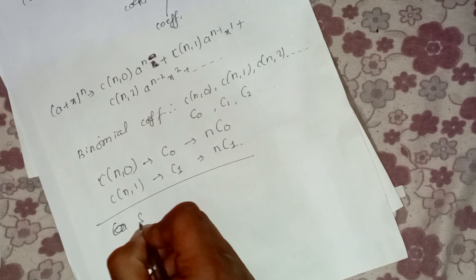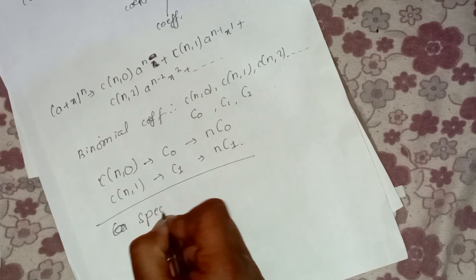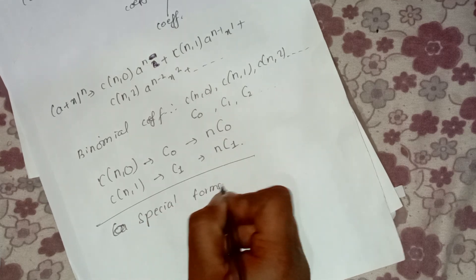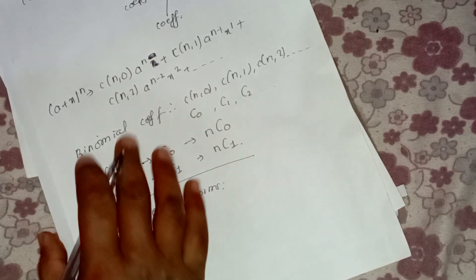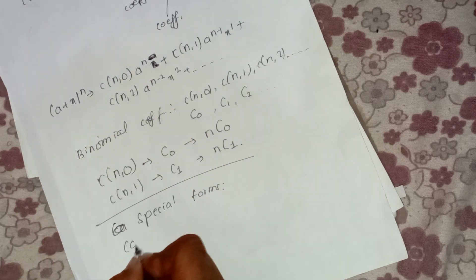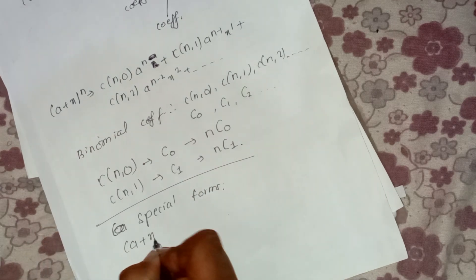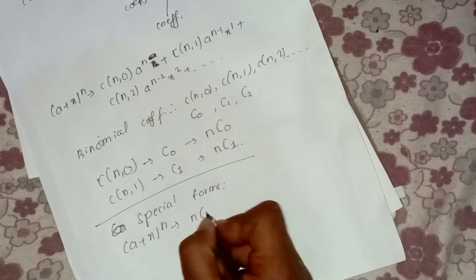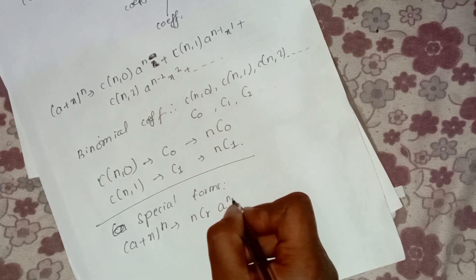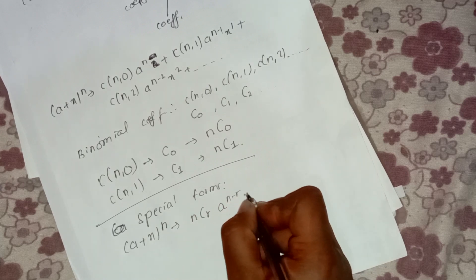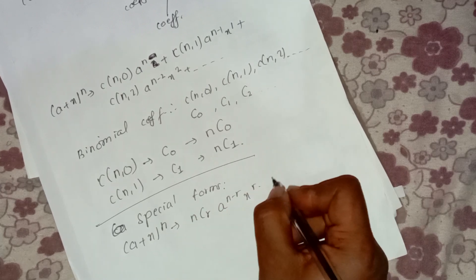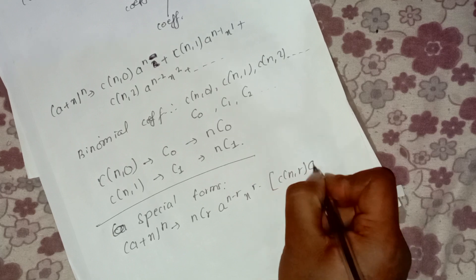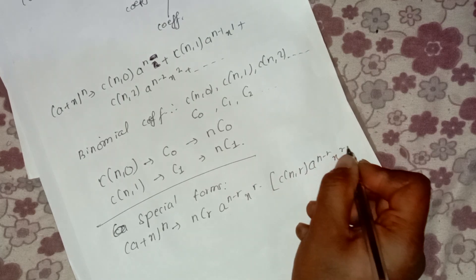One special form: for (a + x)^n, we have the general term as C(n, r) times a to the power (n minus r) times x to the power r. Notice that C(n, r) equals C(n, n minus r), which is a useful symmetry property.